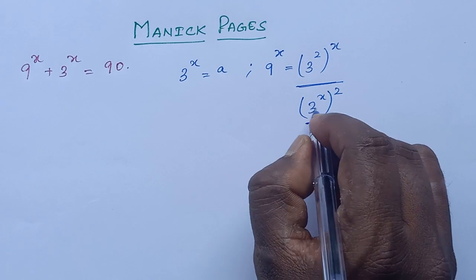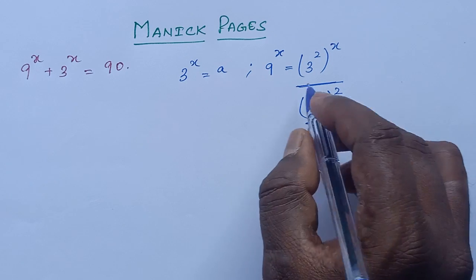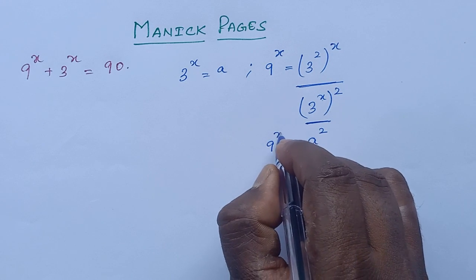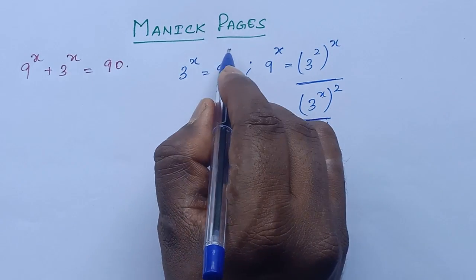So 3^x is nothing but a, so this becomes a squared. So 9^x is nothing but a squared, and 3^x is equal to a.